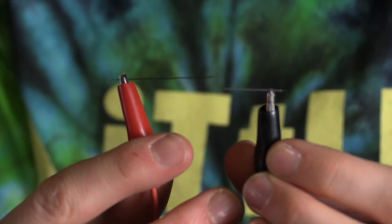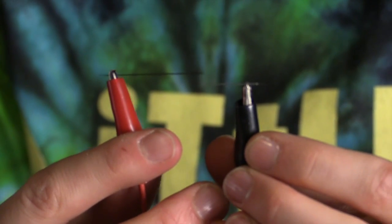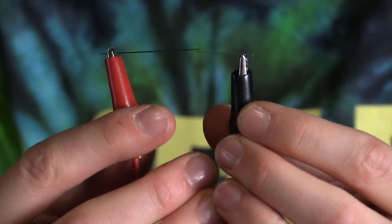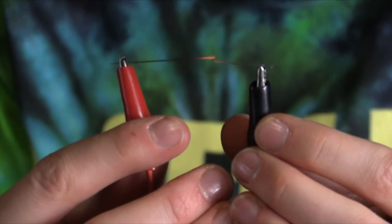And if I touch these, I can get an arc between them still. And this is how a carbon arc light bulb works.